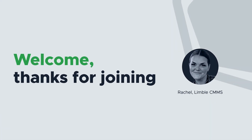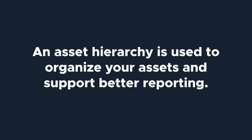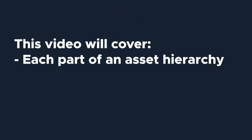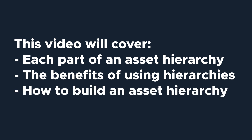Hi everyone, I'm Rachel with Limble's product team. Today we're going to be talking about creating asset hierarchies in Limble. An asset hierarchy is used to organize your assets and support better reporting. Parent assets can be used to collect data about child assets and also pass along data, such as PMs, to make setting up your preventative maintenance schedules easier. This video will define each part of an asset hierarchy, explain the benefits of an asset hierarchy, and show you how to build one in Limble.